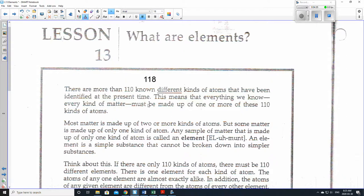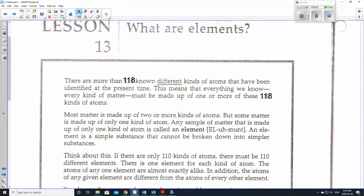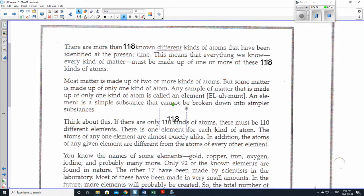But really, in the laboratories, they've either discovered or made a few more elements from the time that they printed out these handouts. This means that everything we know, every kind of matter must be made up of one or more of these 110 kinds of atoms. So for this worksheet, we're not going to use 110. We are actually going to use 118. Let's change all of the 110 to 118. I'm going to change these all to 118 just because I think it's important to have accurate information.